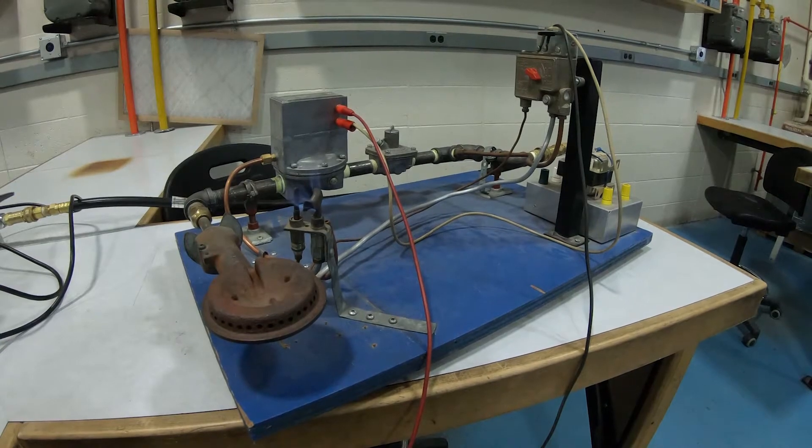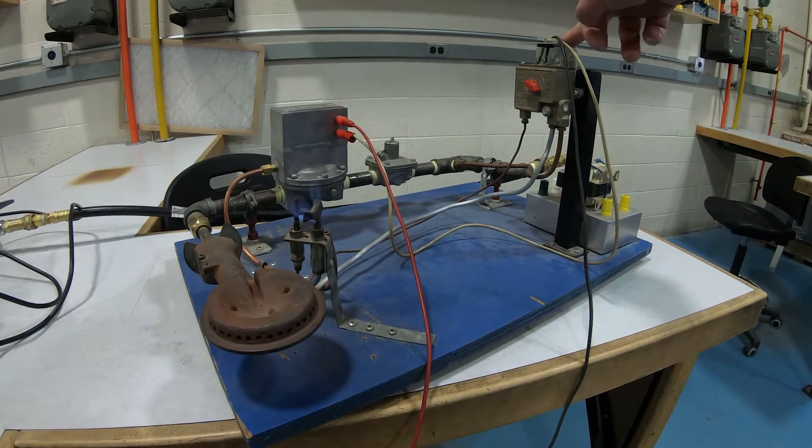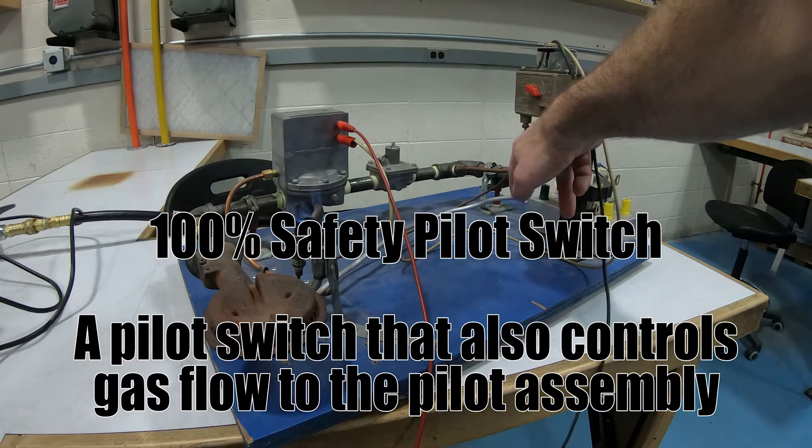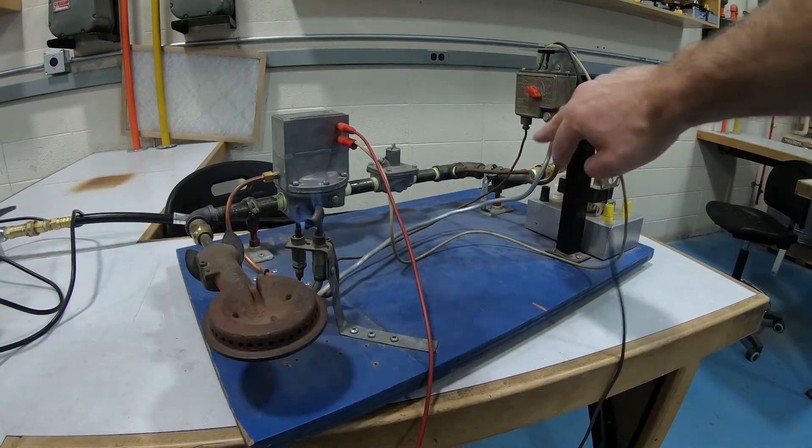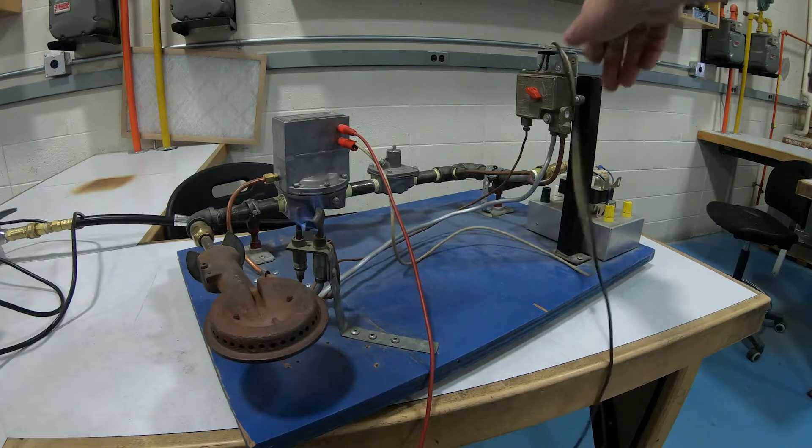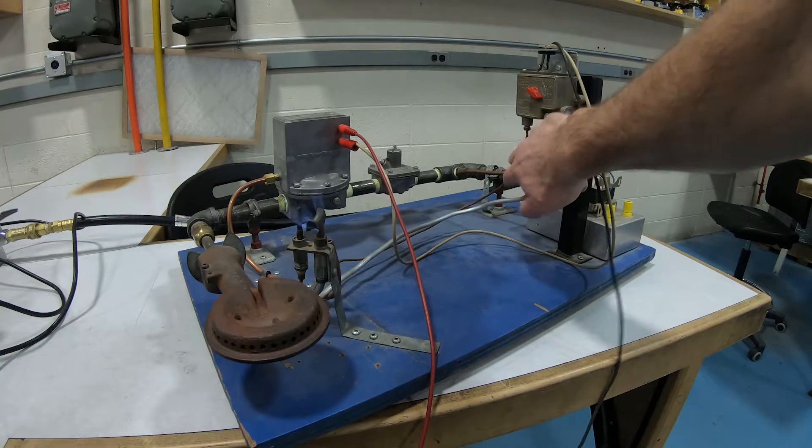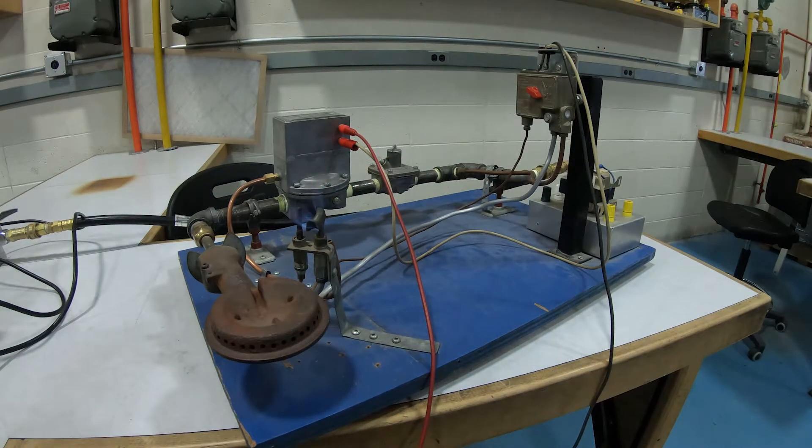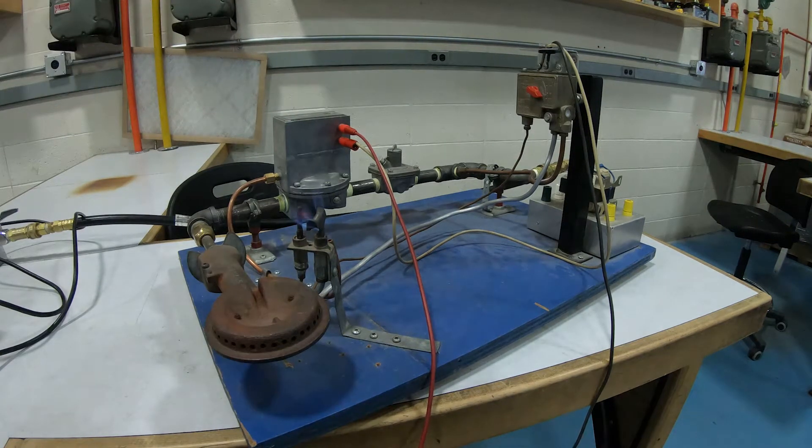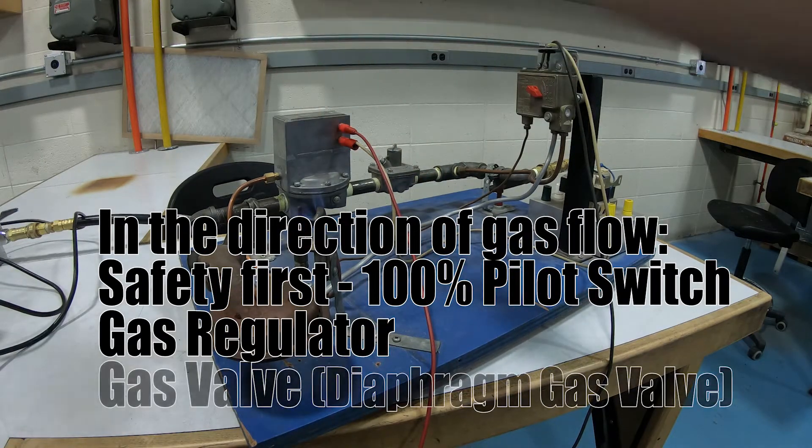Now, I have one more 100% safe setup to show you. Now, we've got a slightly different device right here. This is still a pilot switch, but it's a 100% safe pilot switch. Meaning the gas comes in through here. And the pilot gas then comes down through there. So not only is it an electrical switch, it also switches the gas as well. Once again, it just uses a regular thermocouple connected the regular way. And in this case, we're once again using a diaphragm gas valve. So once again, safety first, regulator, gas valve control.